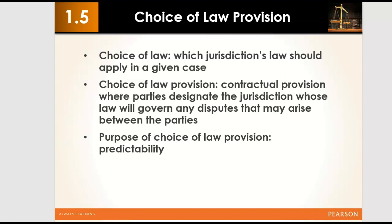If parties don't choose a law, the laws of a country or specific state will be automatically applied. Parties choose a law because of the freedom to contract — the principle that in most cases parties are free to contract as they wish, except where prohibited by law. One of those choices is the applicable law. That is the choice of law provision.